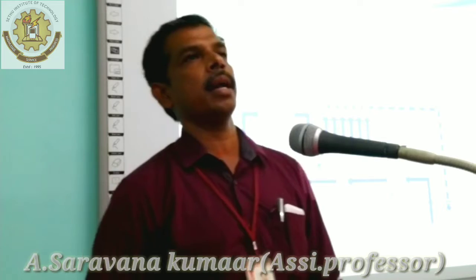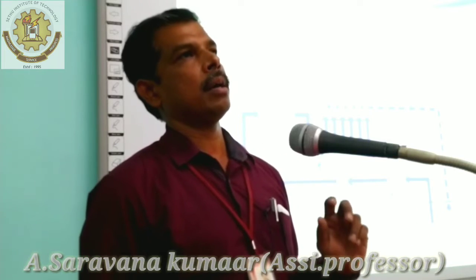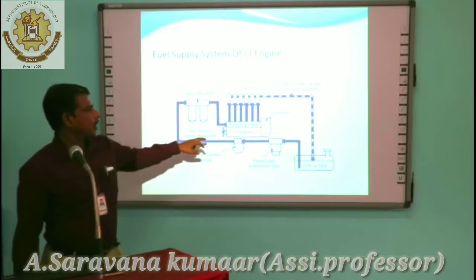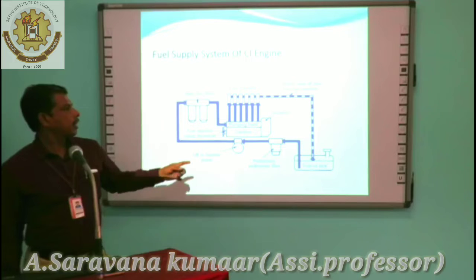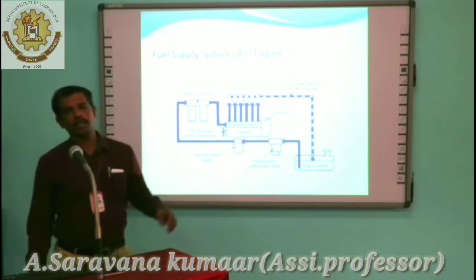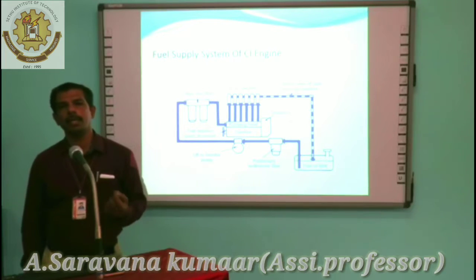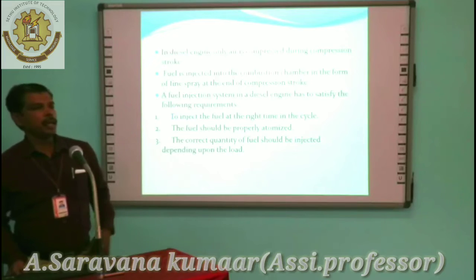Like in the spark ignition engine where the carburetor is the heart of the engine, in the compression ignition engine, the fuel injection pump and the nozzle are the two hearts of the system. These two systems change the liquid fuel into atomized form. After the fuel injection pump, it enters into the fuel injector. The injector atomizes the fuel so that it may easily mix with the air. In this engine, only air is compressed.